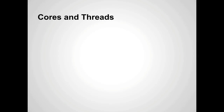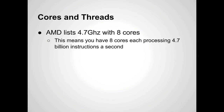I want to talk about cores and threads. An AMD processor lists a 4.7 gigahertz processor with eight cores. That means you have eight distinct cores, each processing 4.7 billion instructions a second. So you have eight distinct units processing this information. That's incredibly powerful.